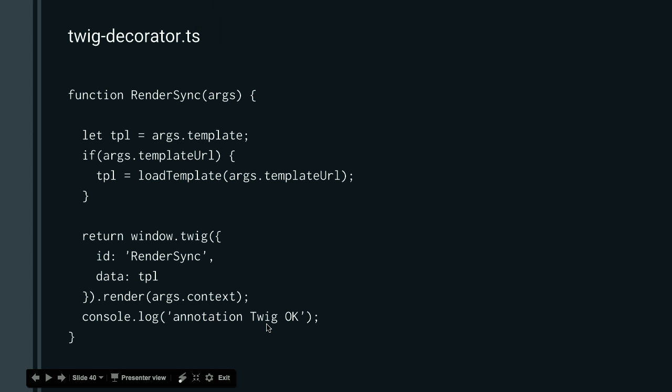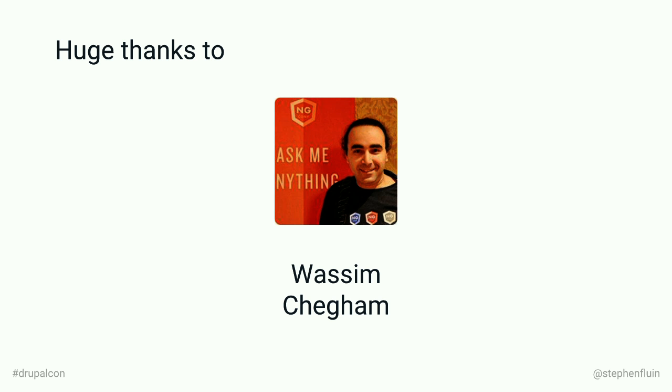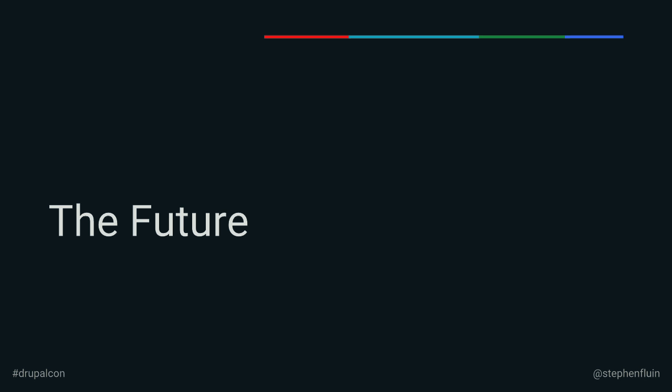What I've got here is the TwigDecorator.ts file — a part of that library we showed you. What this is doing is just loading the template and then replacing all the arguments and doing a full rendering. One thing that is still open is making the template rendering async. One of the nice things about Angular is that almost everything is done via async processes and observables, but right now the Twig template rendering is synchronous, which means it's going to block the rendering of whatever else you're doing. That's a project by a gentleman by the name of Wasim — he was at DrupalConf last week.